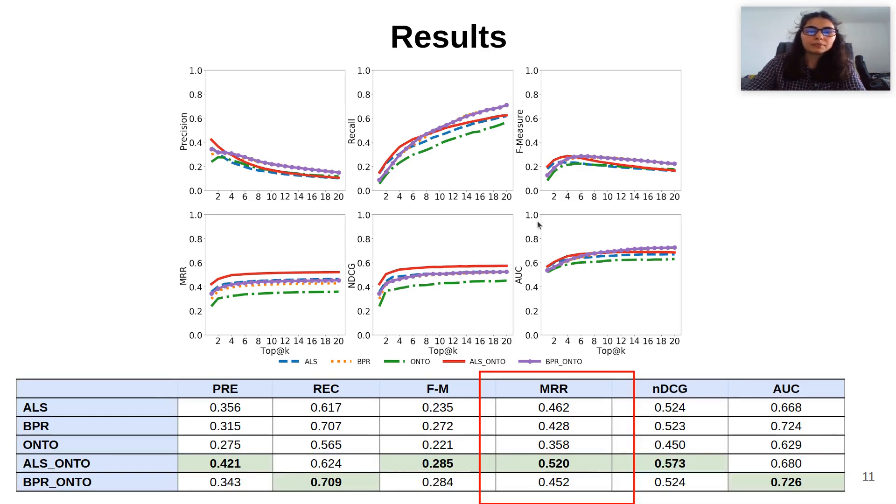This table shows the best values for each algorithm. The hybrid algorithms achieved the best results, with the highest improvement in the mean reciprocal rank metric, from ALS to ALS ONTO, with an improvement of approximately 6%.